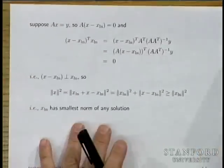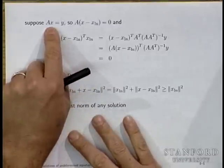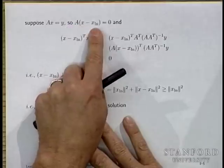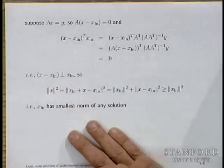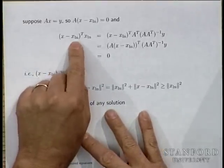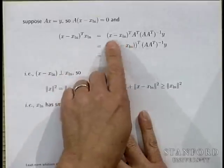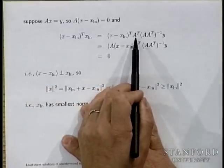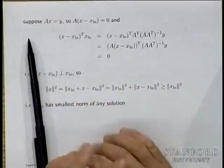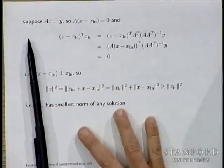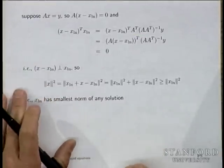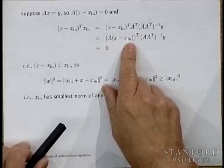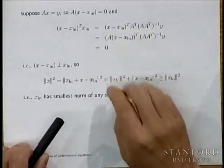We can show this by direct argument. Let x be any other solution of Ax equals y. Then A(x minus x_ln) is zero because Ax is y and so is A x_ln — both are y. Now calculate the inner product of (x minus x_ln) and x_ln. By matrix manipulations, this involves A(x minus A x_ln), which is zero. So the right-hand side is zero.